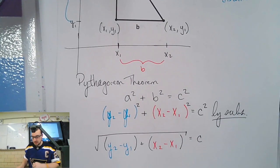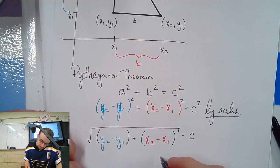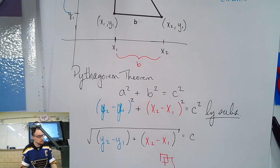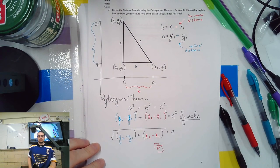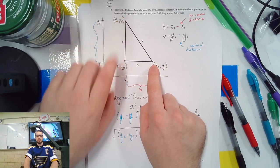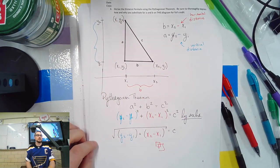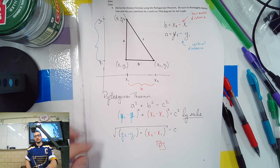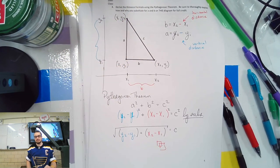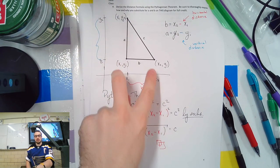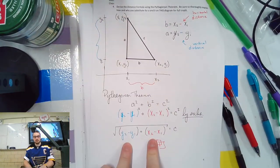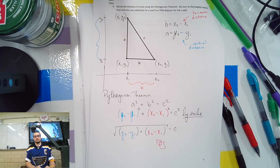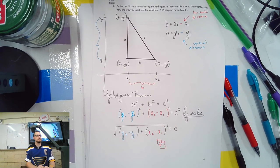Ta-da — the distance formula. Here's what we did: we said the distance between two points can be broken into a triangle of any size, so it works for any two points. The vertical part is y₂ minus y₁ and the horizontal part is x₂ minus x₁. If you know the coordinates, you can plug them in and find the distance. It all comes from the Pythagorean theorem.